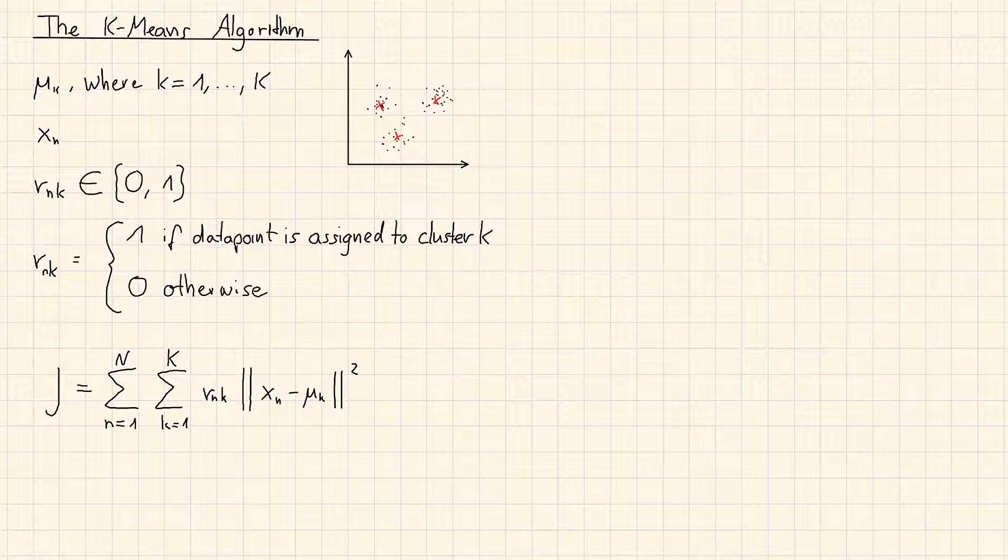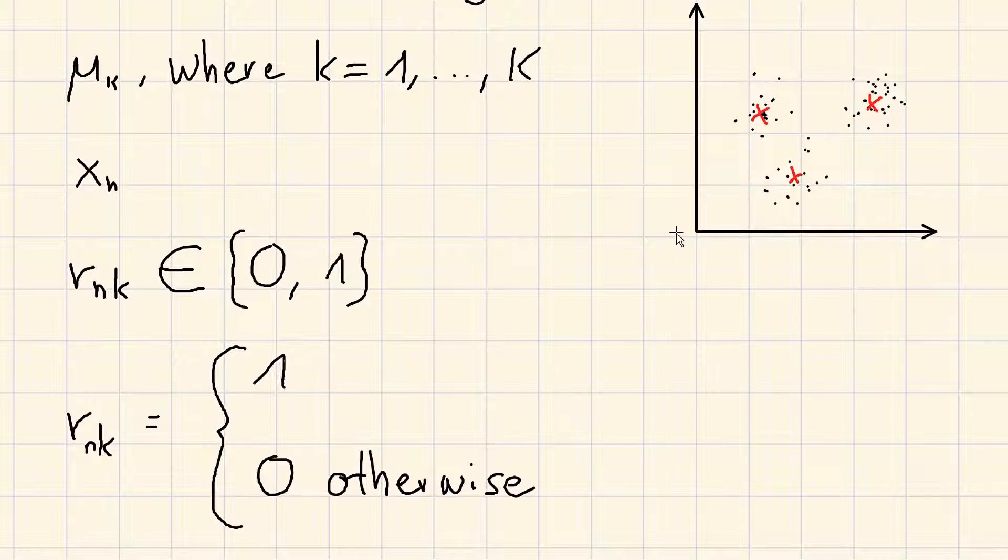The rnk is determined in the step where we measure our distances from each cluster center to each data point. Formally, it would look like this.